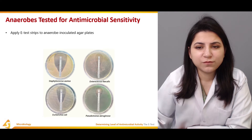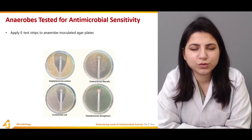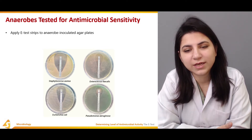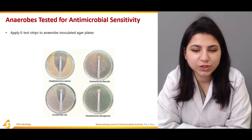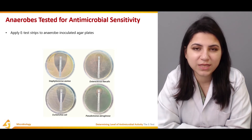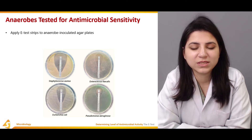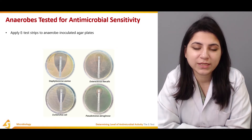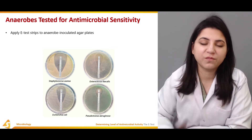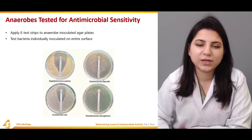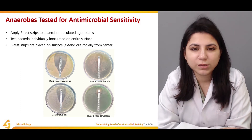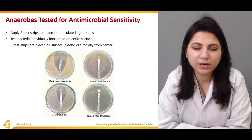The anaerobes tested for antimicrobial sensitivity are inoculated onto agar plates. You can see examples such as Staphylococcus aureus, Enterococcus faecalis, Escherichia coli, and Pseudomonas aeruginosa. A strip is placed at the center of the agar plate and the clear zone around the strip determines the activity of the antimicrobial agent at a concentration that can stop bacterial growth. The test bacteria are individually inoculated onto the entire surface, and the E-test strips are placed on the surface extended radially from the center.